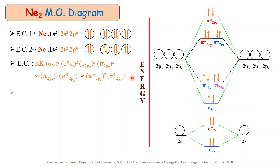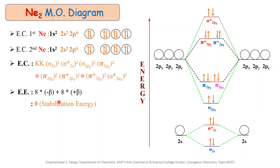The next important point is the energy involved during the formation of a Ne2 molecule. There are a total of 8 electrons present in the bonding molecular orbital and 8 electrons present in the antibonding molecular orbital, as we saw earlier. Putting these values into the formula — number of electrons in bonding MO multiplied by minus beta, plus number of electrons in antibonding MO multiplied by plus beta — we get: 8 × (−β) + 8 × (+β) = zero stabilization energy. That means there is no net evolution of energy during the formation of a Ne2 molecule, meaning no Ne–Ne bond formation.